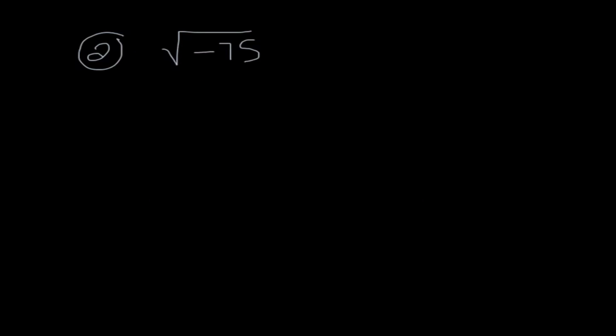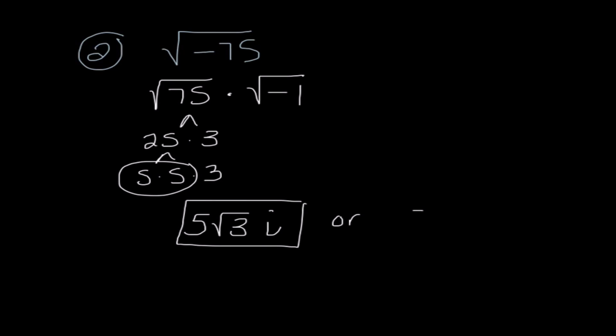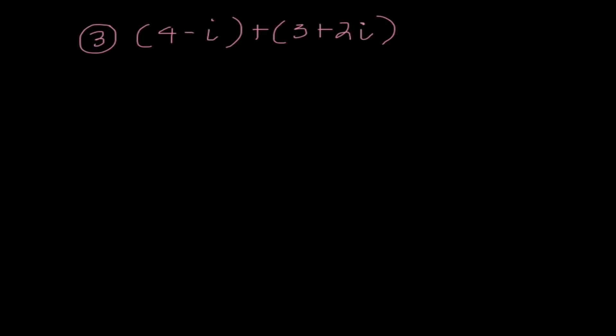Number 2, same idea. I'm going to think of this as the square root of 75 times the square root of negative 1. And really, if you haven't noticed, we're doing problems exactly like our last lecture, except we're putting an i after. That's the only difference. I know 75 is 25 times 3, so I'm going to think of this as 5 times 5 times 3. So I have my group of 5s that I can take out. So I have 5 radical 3 i, or once again, we could write this as 5 i radical 3. It doesn't matter which way we do it.